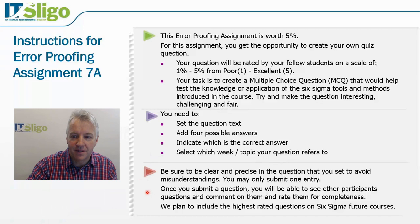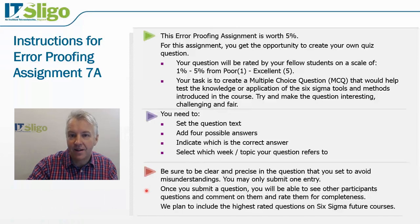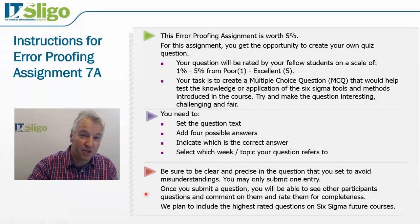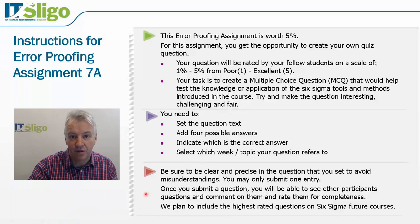Once you submit, you'll be able to see other participants' questions and comment on and rate them. If you want to give a very high rating — a four or five — that's excellent, and the highest-rated questions we plan to include on future Six Sigma courses. If you think the question is trivial, too easy, or not well written, give it a two or three as a pass out of five, and if you think it's terrible, give it a one.